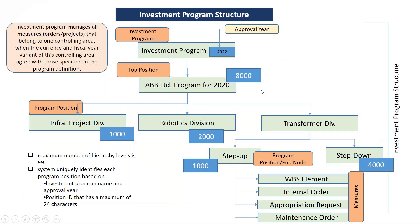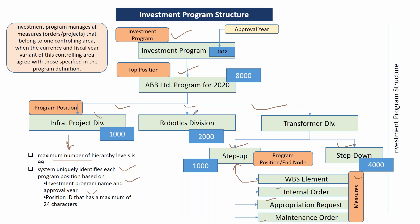When creating the investment program, you have the program, top level position, and next level of positions. Measures — WBS element, internal order, appropriation request, maintenance order — can be assigned only to the last level of positions. In the investment program structure, you can have a maximum of 99 positions. The system uniquely identifies each program position based on investment program name and approval year. Position ID can have a maximum of 24 characters.